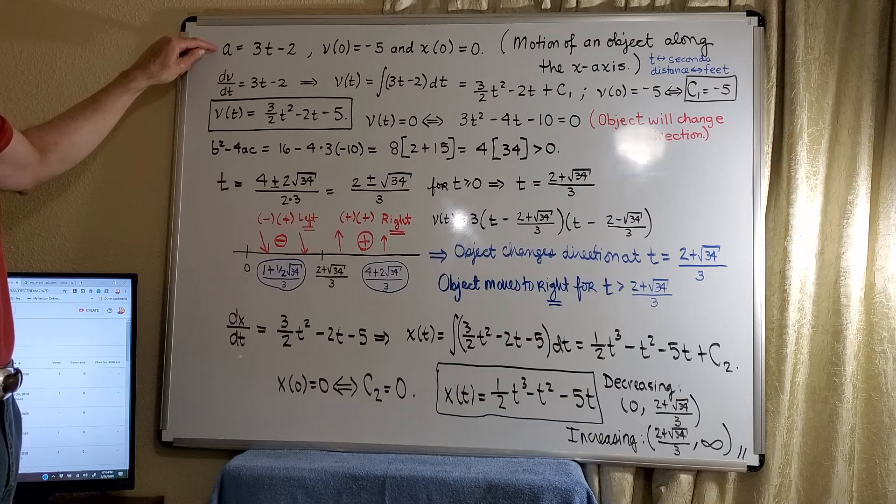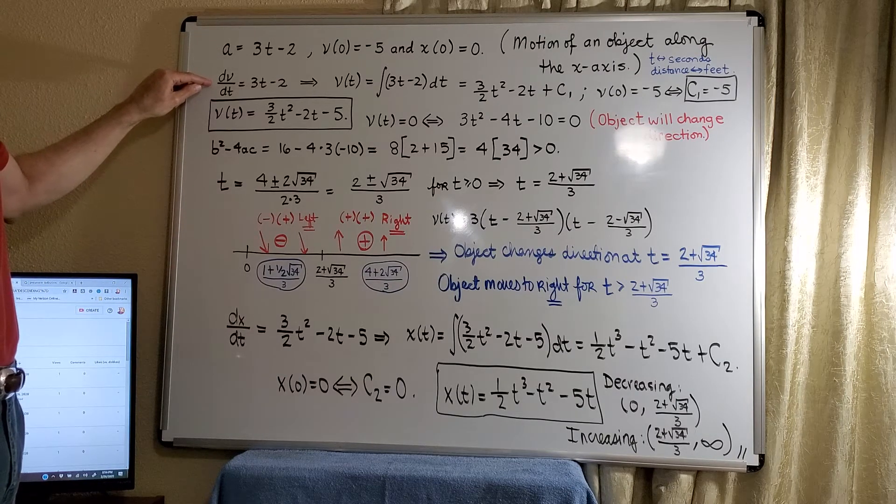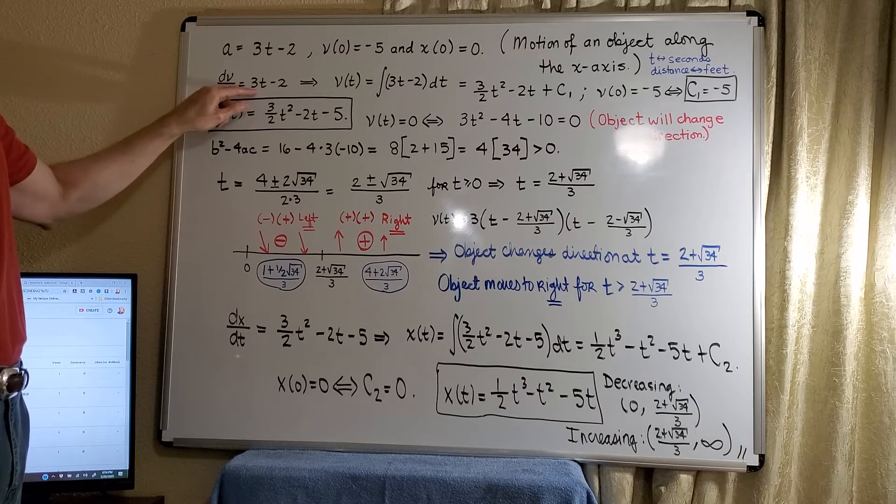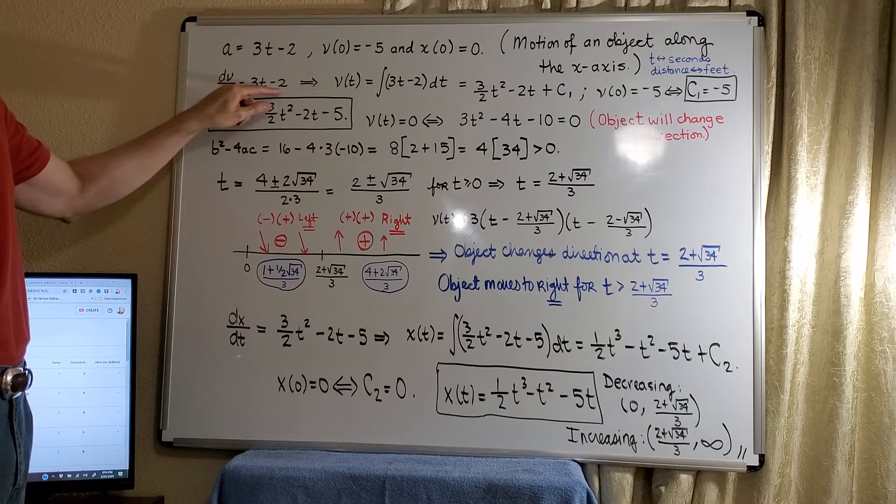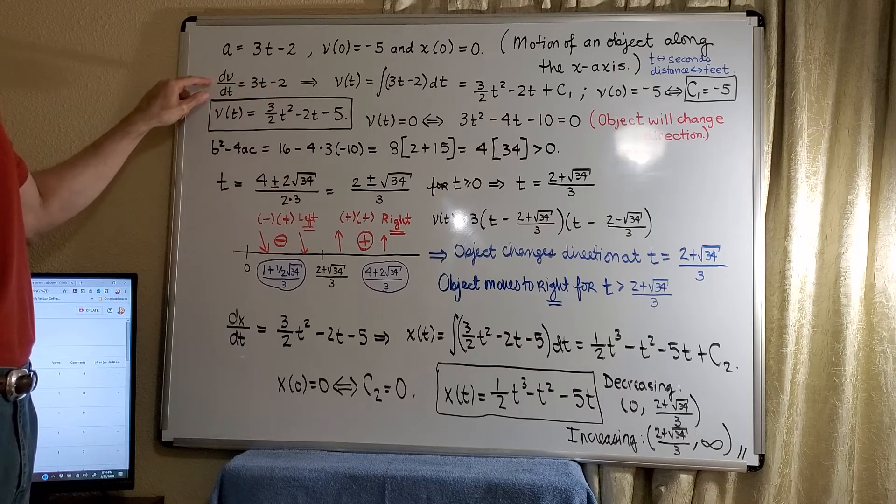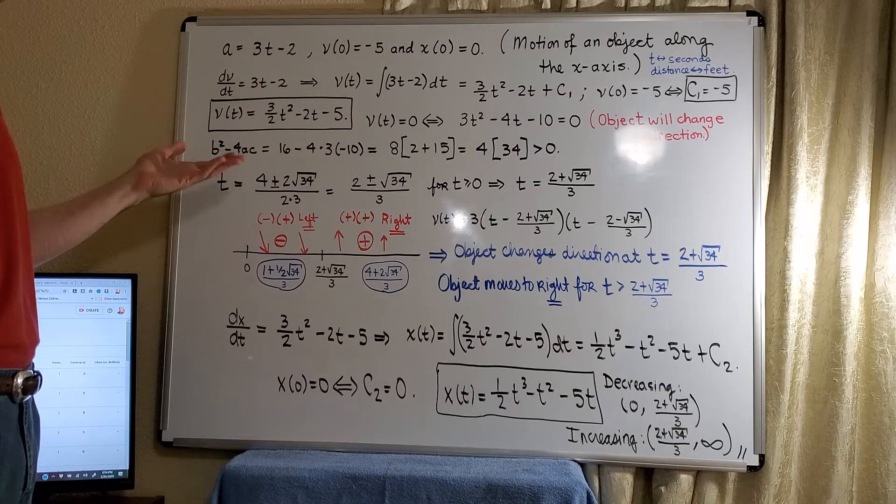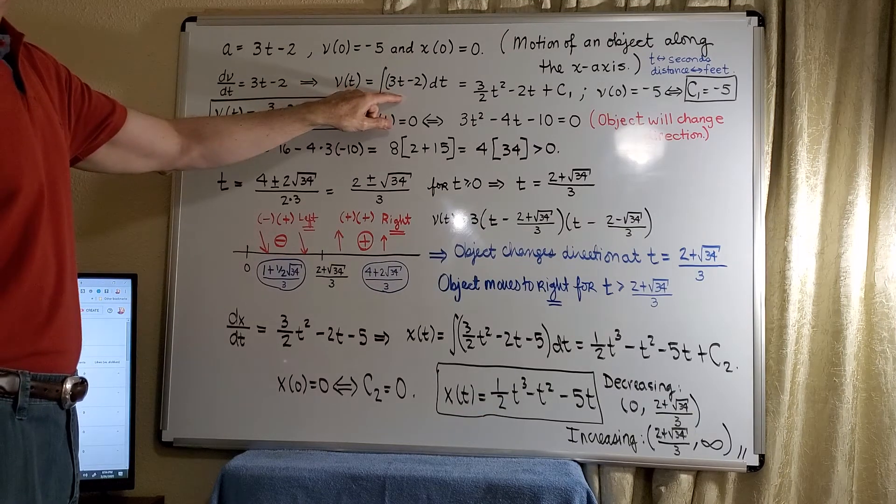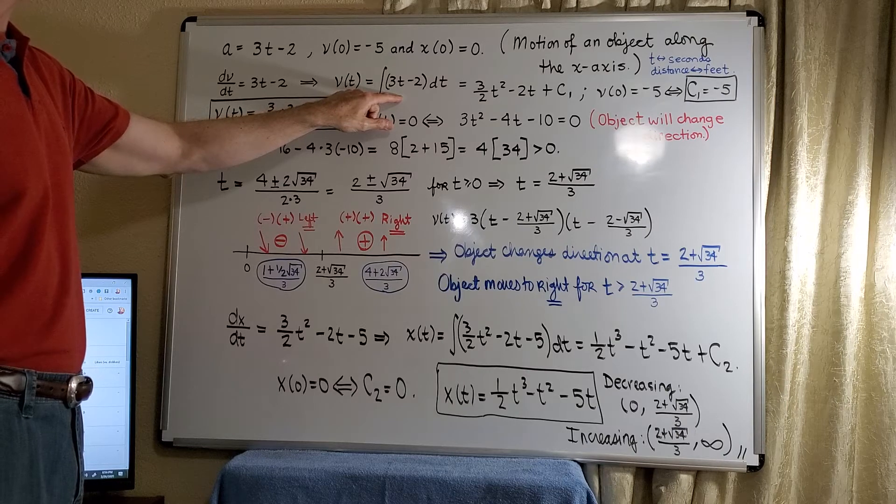We know that acceleration is actually the instantaneous rate of change of velocity. So we have dv/dt is equal to 3t minus 2, or you could just say v prime. And we can anti-differentiate to undo the derivative.